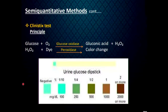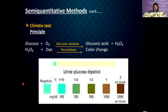The Clinistix test uses the glucose oxidase method and is widely used in urine dipstick strips. The strip end is impregnated with glucose oxidase, peroxidase and a dye. When freshly voided urine is applied, after approximately 10 seconds a colour develops, which is compared with a standard colour chart and the result is interpreted.